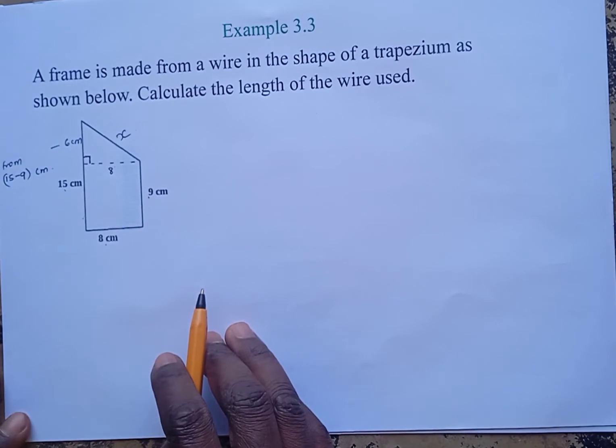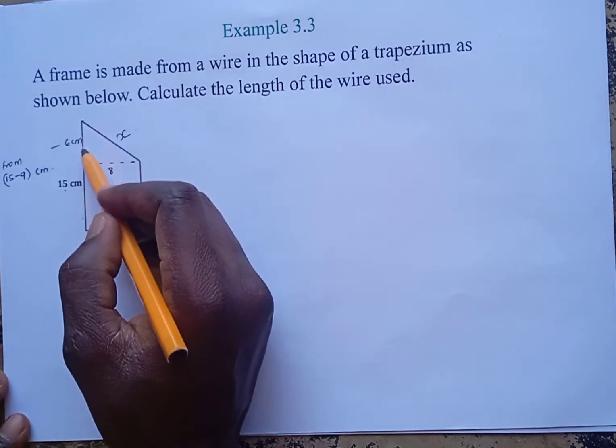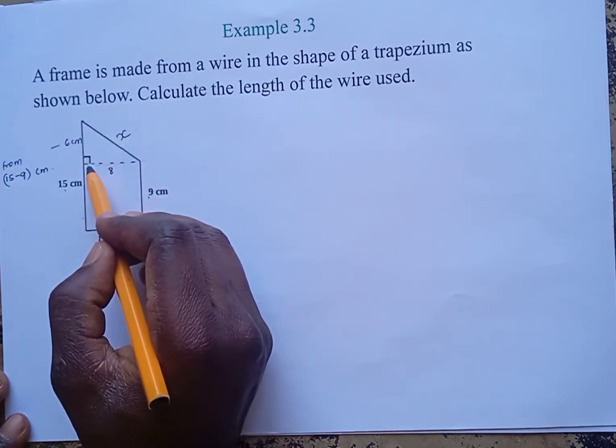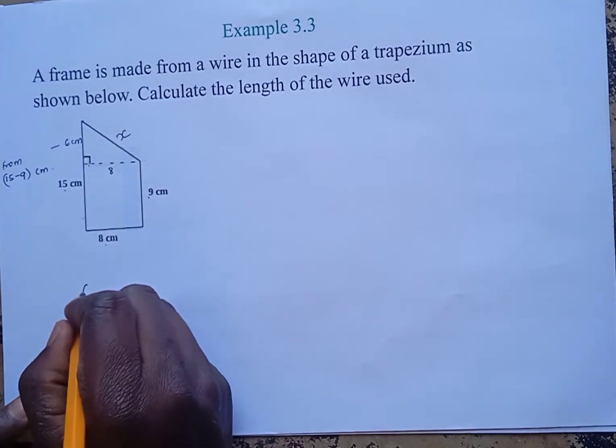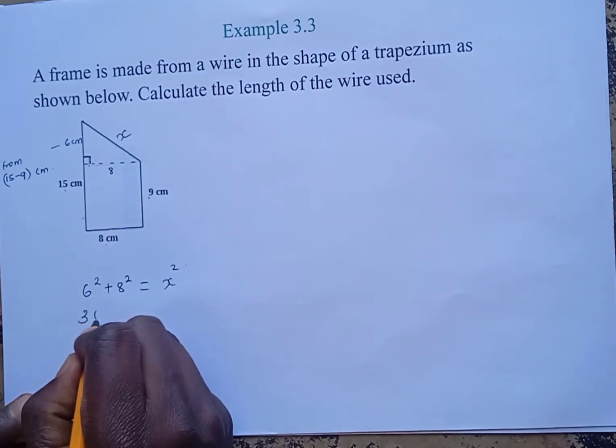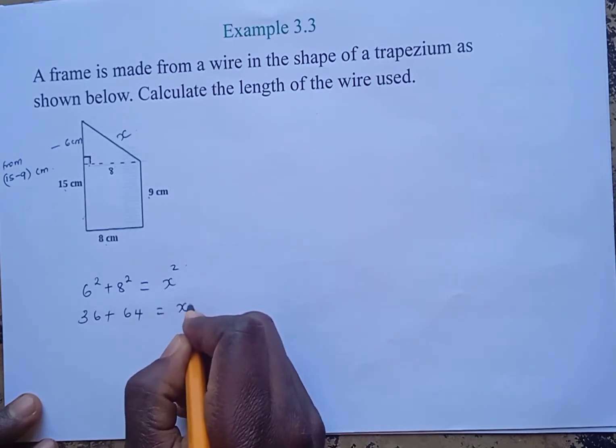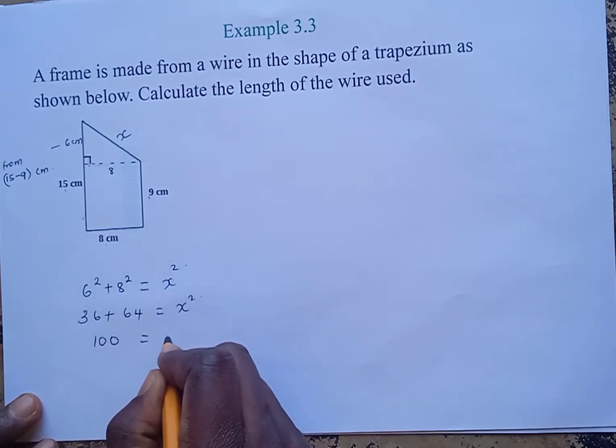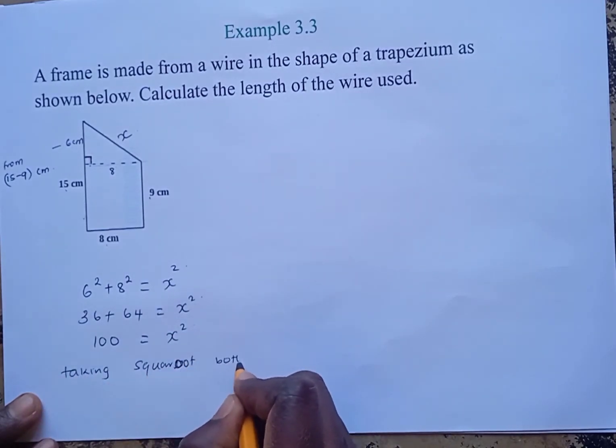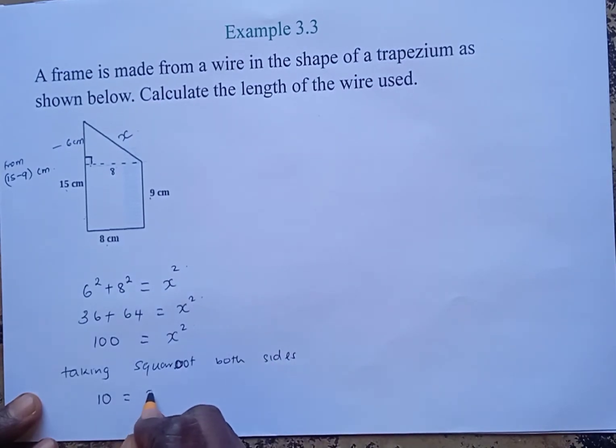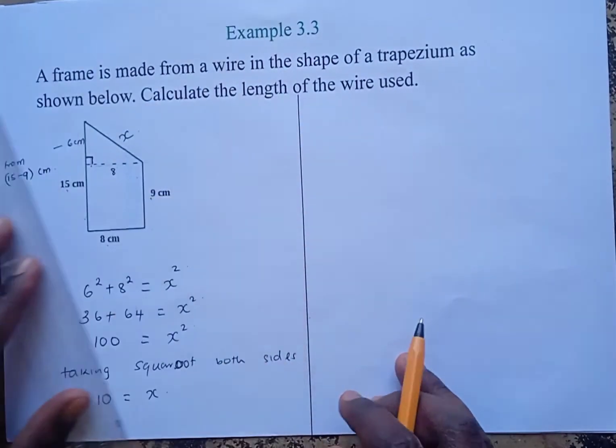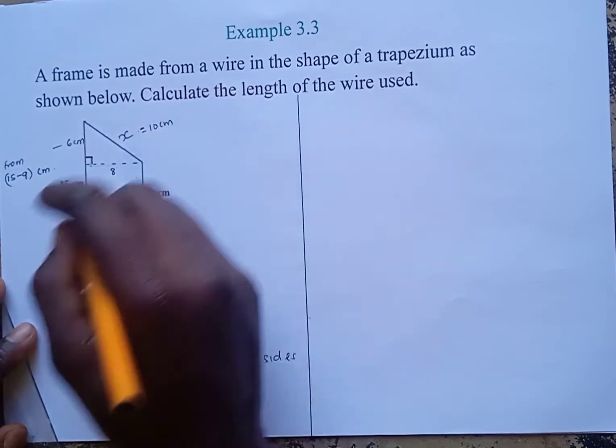We're getting the 6 from 15 minus 9 centimeters. Now we consider that triangle which I'm showing there. We use the Pythagorean theorem: 6 squared plus 8 squared equals X squared. That is 36 plus 64 equals X squared, which is 100 equals X squared. We take the square root of both sides, then X equals 10. Therefore, X is 10 centimeters.